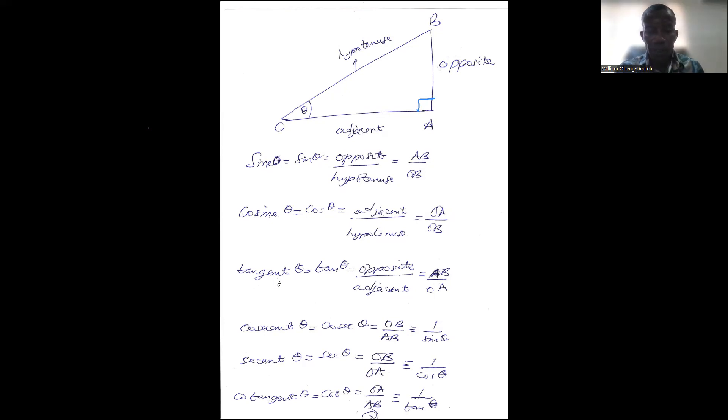Tangent of theta is opposite over adjacent, and that is AB over OA.